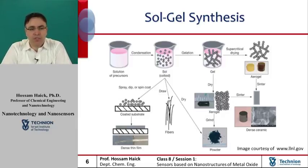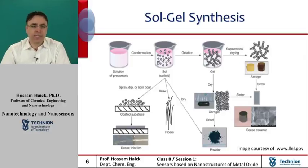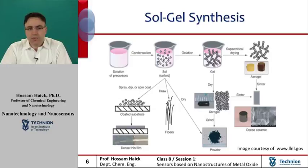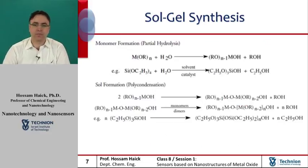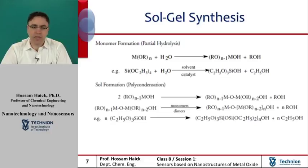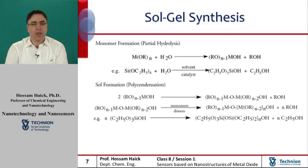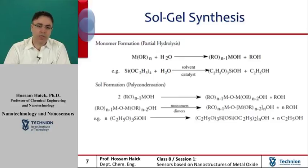Several studies have shown that thin films with a variety of properties can be deposited on a substrate by spin coating or dip coating. When the sol is cast into a mold, a wet gel is formed. With further drying and heat, the gel is converted into dense material. If the liquid in a wet gel is extracted under supercritical conditions, a highly porous and extremely low-density material called aerogel is obtained. The starting materials used in the preparation of the sol are usually inorganic metal salts, and the precursor is subjected to a series of hydrolysis and polymerization reactions to form the colloidal suspension, the so-called sol.